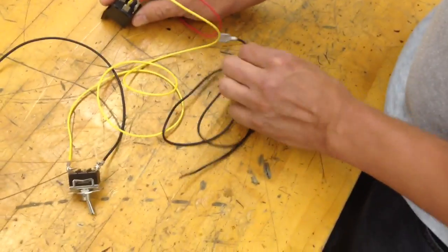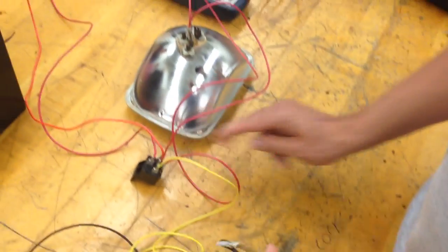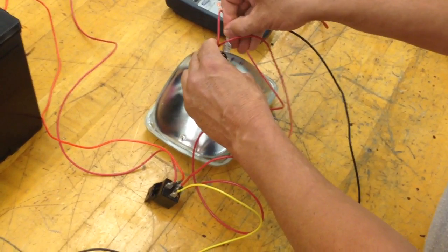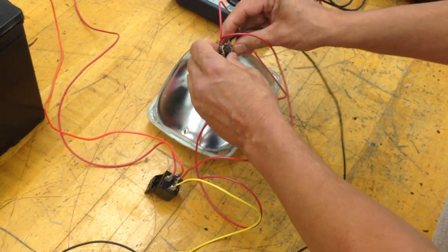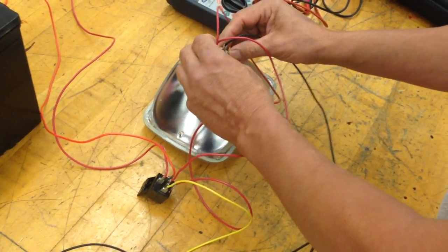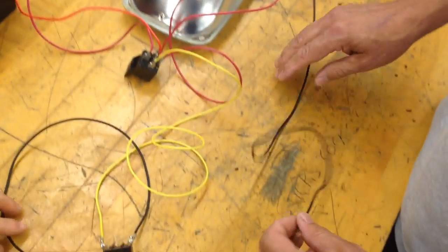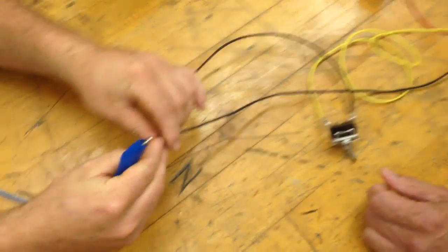We're going to take the other black ground wire here and connect it to the headlight on the ground spot. Now, we're going to take both these ground wires and connect them together.